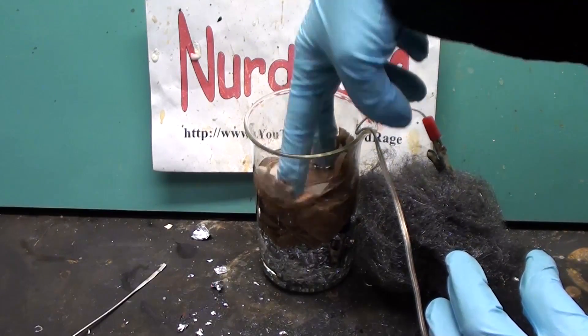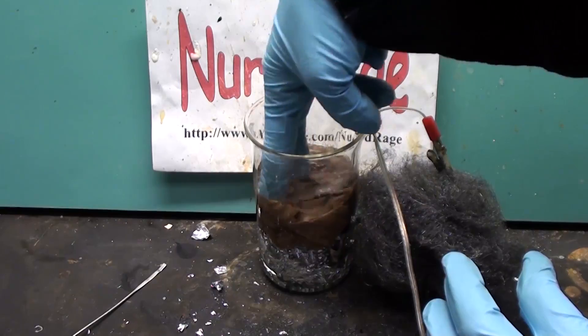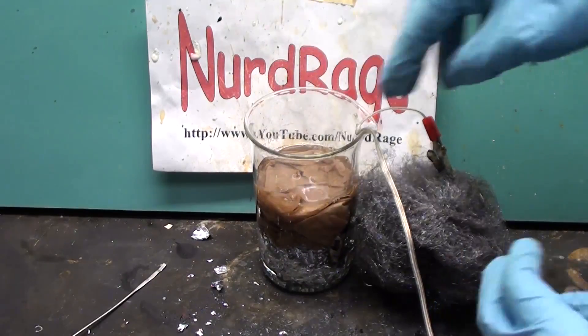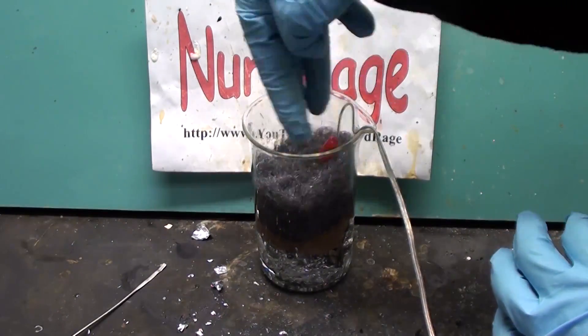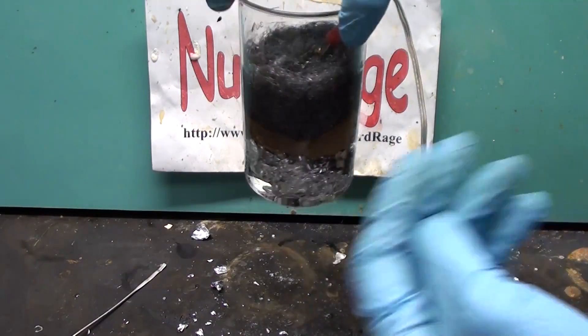Make sure that the aluminum is completely covered as well as the metal part of the alligator clip. Now stuff the steel wool on top. And that is a simple aluminum air battery.